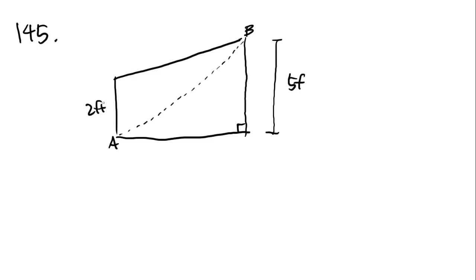Number 145 has a drawing. I will attempt to draw this. It's a trapezoid and it looks like this. Let me tell you this is B, and this is A. And there's a dotted line. It goes like that. This is supposed to be straight, I know it looks kind of curved, but pretend it's straight. Here we have 5 feet, and this is a right angle. And we have 2 feet right here.